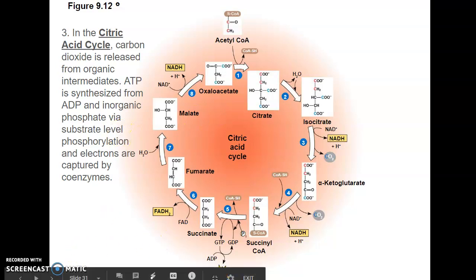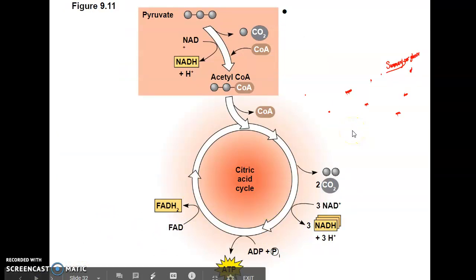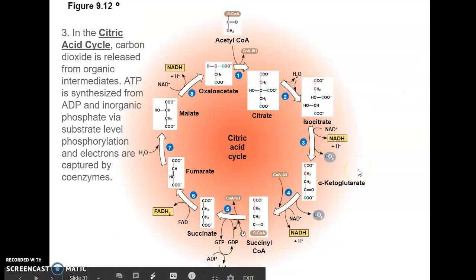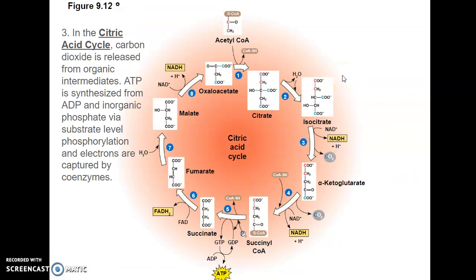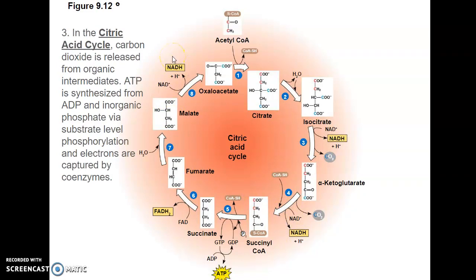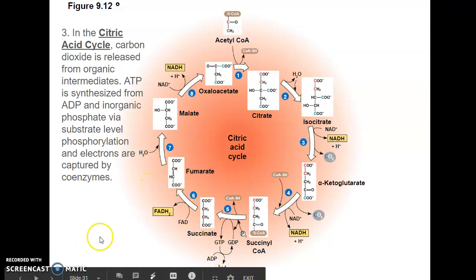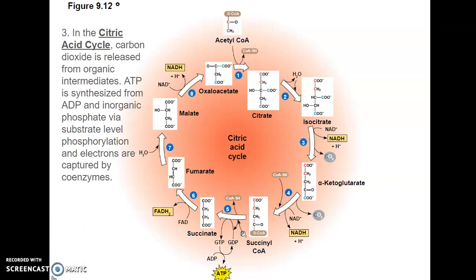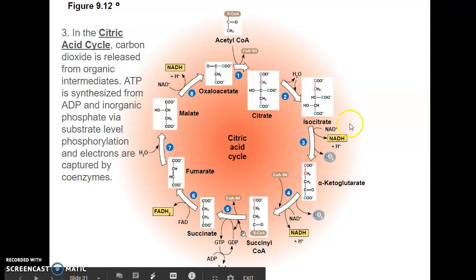Looking at our summary diagram, there is a lot of energy produced per cycle. For each acetyl-CoA, we produce one NADH in step three, one NADH in step four, and one NADH in step eight — three total. We also generate one ATP and one FADH2. If we multiply by two for both acetyl-CoAs, we're generating six NADHs, two FADH2s, and two ATPs.